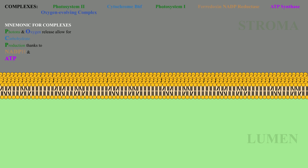The complexes involved in these reactions are listed here. A mnemonic you can use to remember these complexes is shown below. The mnemonic summarizes the processes occurring during the light reactions, and you can match the colors of the words to the colors of the complex names shown at the top.